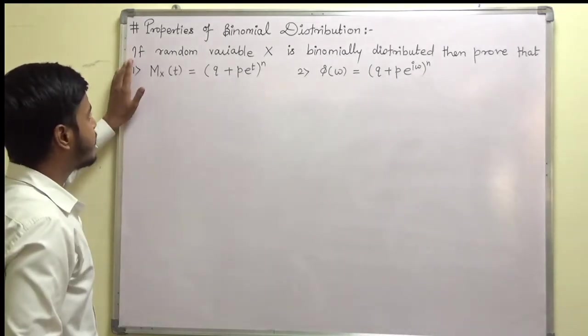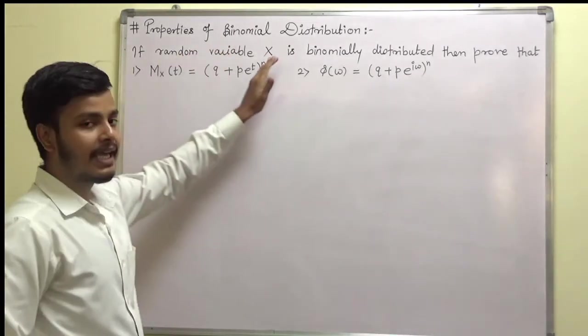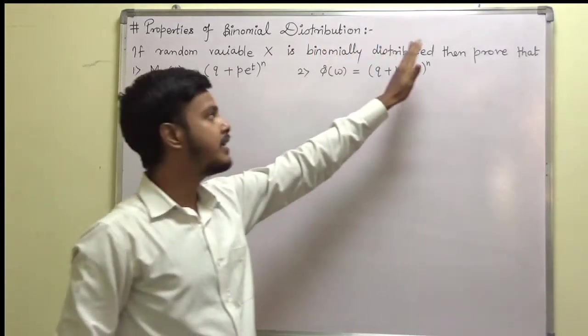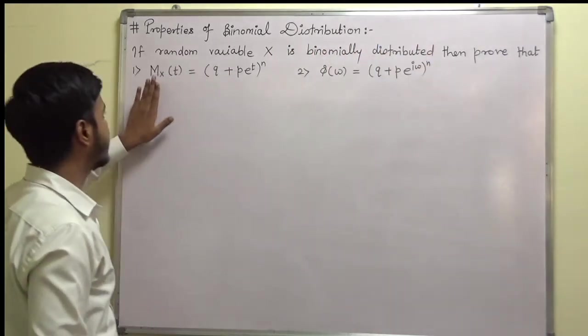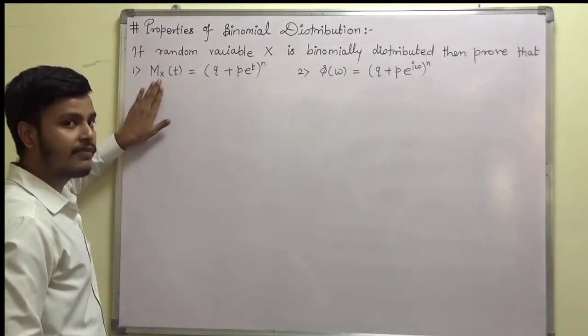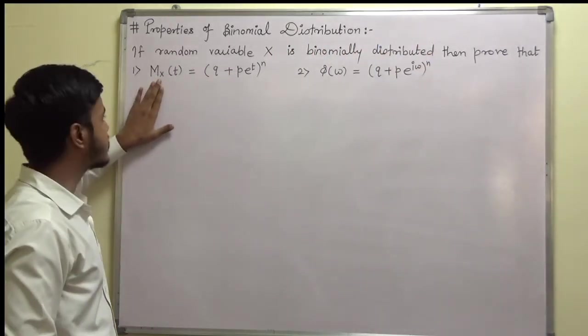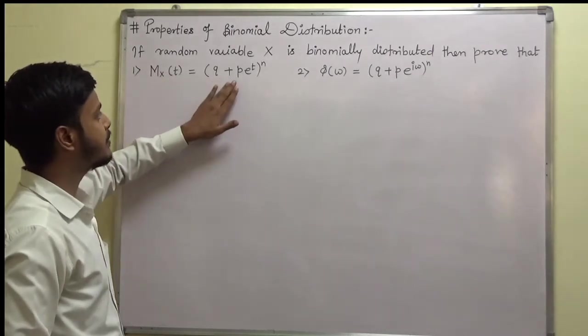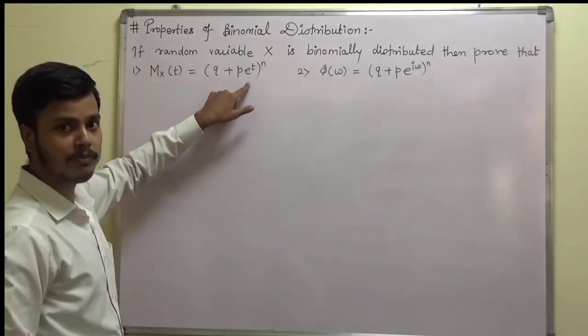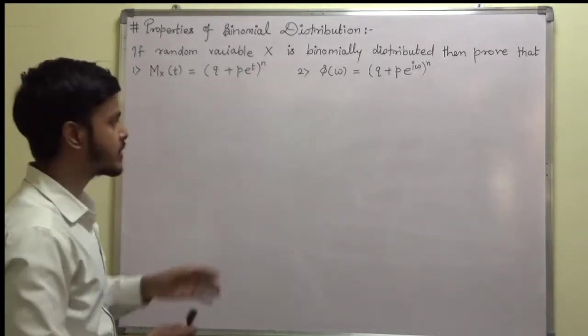It says: if a random variable X is binomially distributed, then prove that the moment generating function M_X(t) is equal to (q + p·e^t)^n.